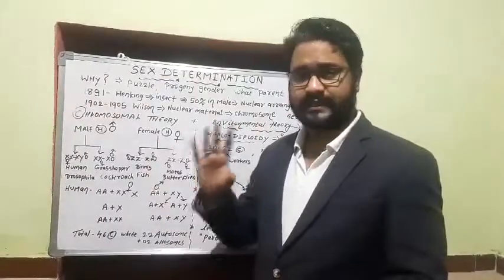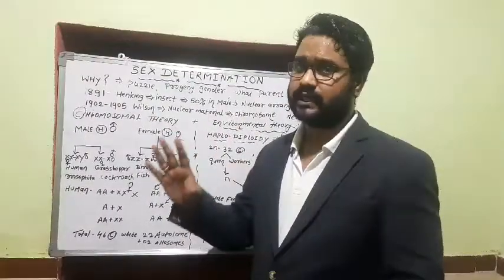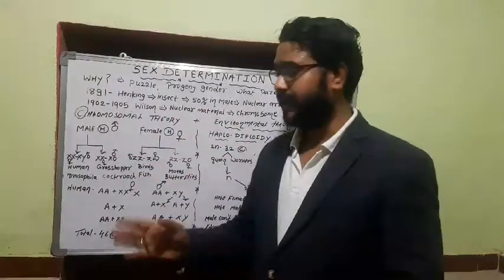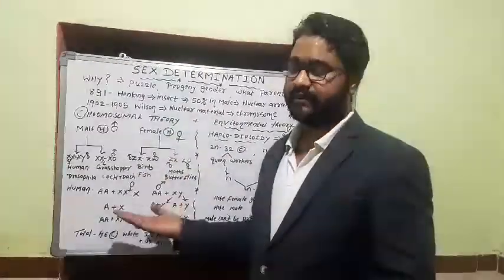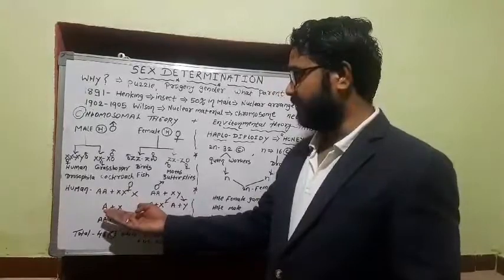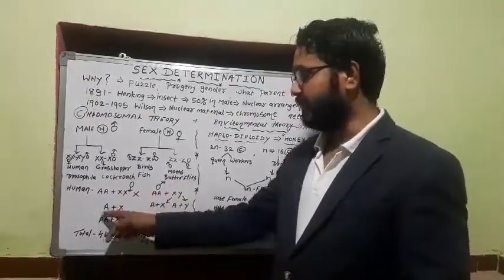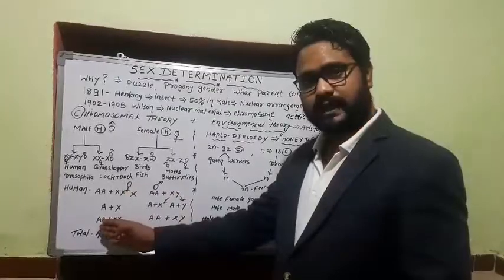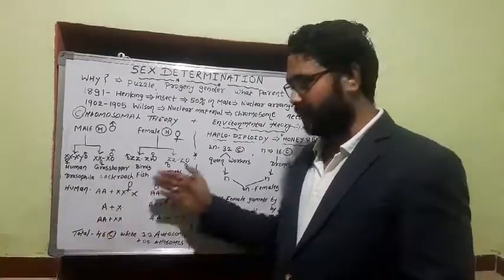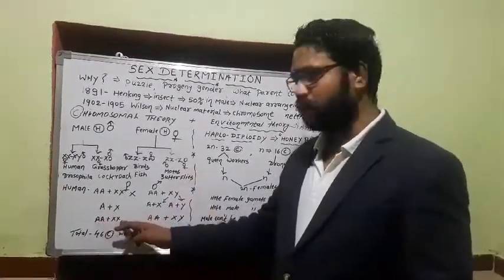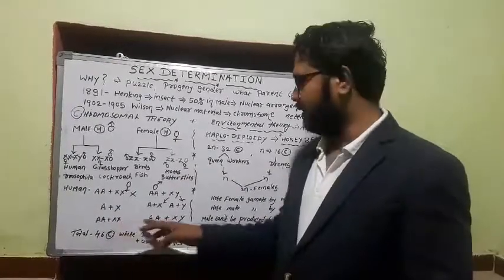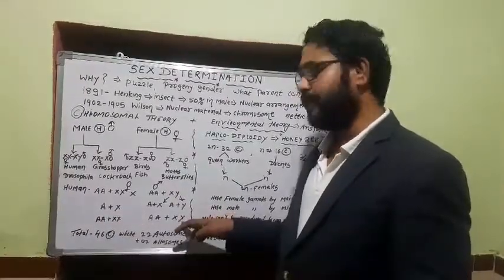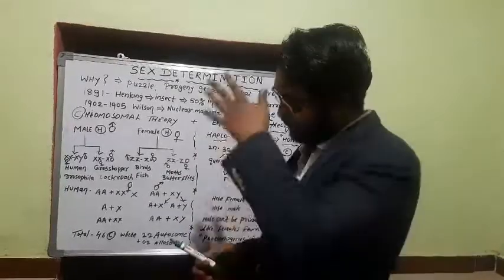To summarize human sex determination: we are diploid, so one of each chromosome goes into the gamete. When two X chromosomes come together after fertilization, we get a female. When X combines with Y, we get a male progeny. The male parent decides sex because he is heterogametic, producing both X-bearing and Y-bearing sperm.